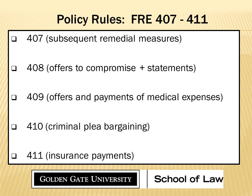Understanding, as the opponent, how the elements of a rule — the foundational requirements of an objection — actually belong to the opponent. So if there are four elements, four foundational requirements, it is the opponent that says, objection, 407, subsequent remedial measures. Objection — I can meet these foundational requirements. Listen to me, Judge, over at sidebar — here's why the foundational requirements, the elements under this objection are met.